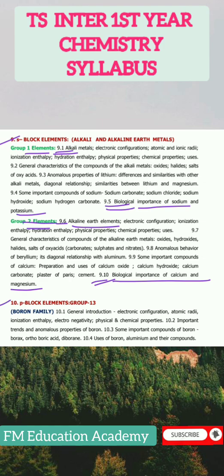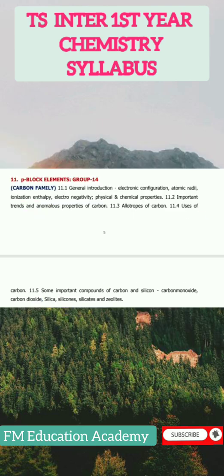The tenth chapter is P Block Group 13 Elements — the Boron family. Topics begin at 10.1 General Introduction, Electronic Configuration, Atomic Radii, Ionization Enthalpy, through to 10.4 Uses of Boron, Aluminium and their Compounds.